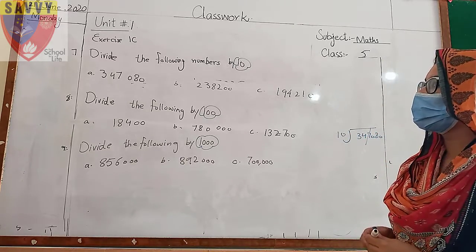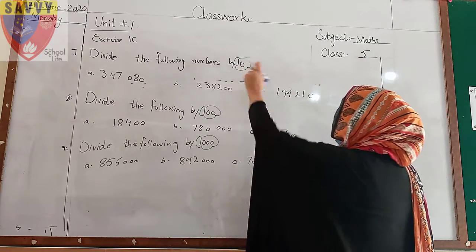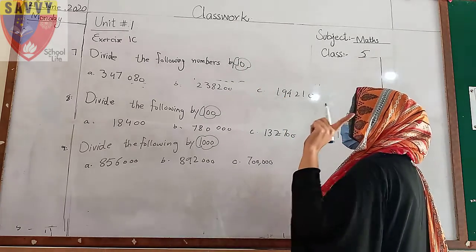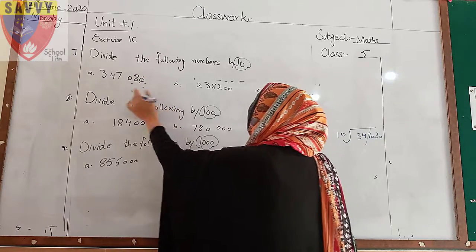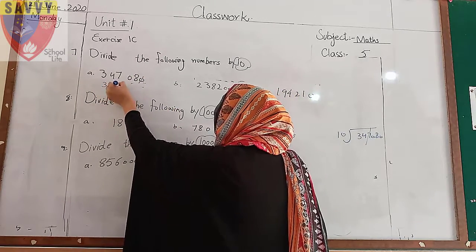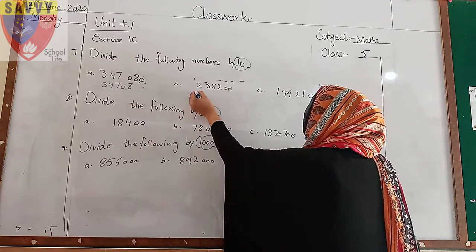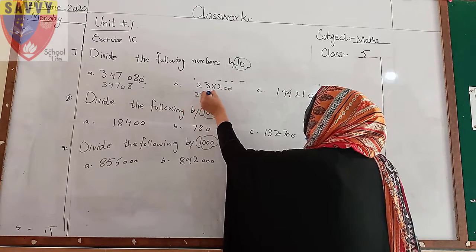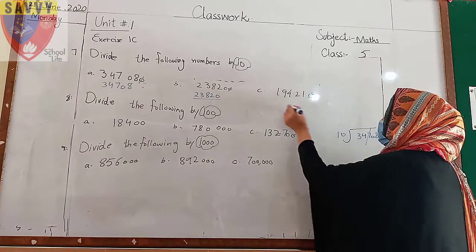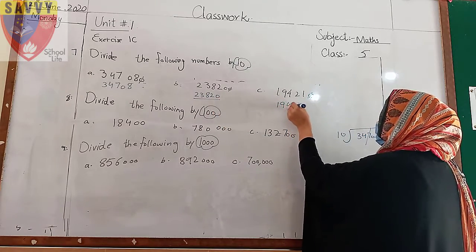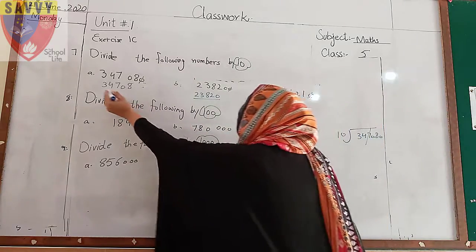To divide, you subtract zeros. When dividing by 10, which has 1 zero, you remove 1 zero from the number. For example, 3820 divided by 10 — you remove one zero, and the answer is 382. Here we have 0 to remove, so minus one zero is our answer.